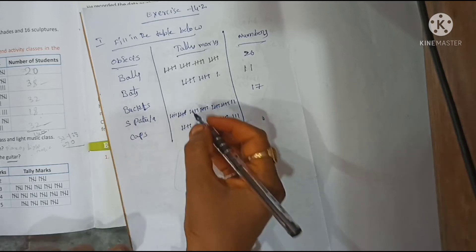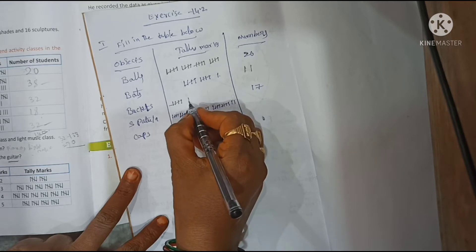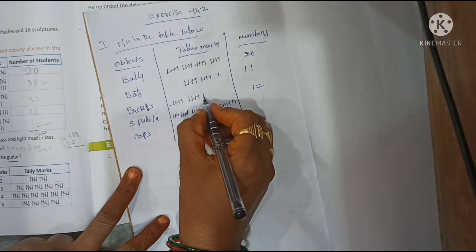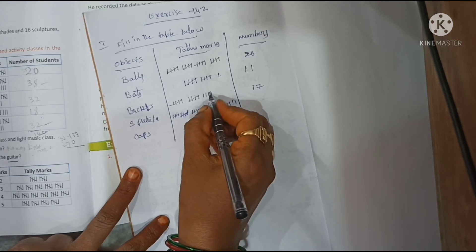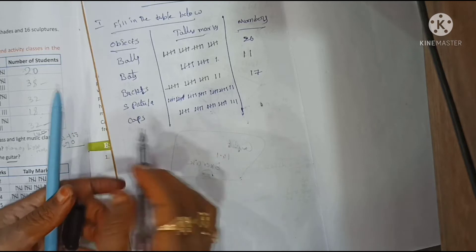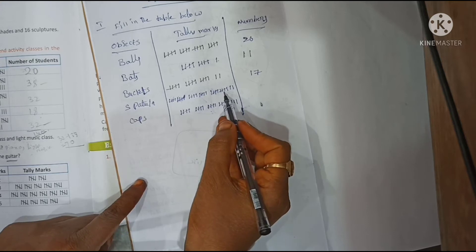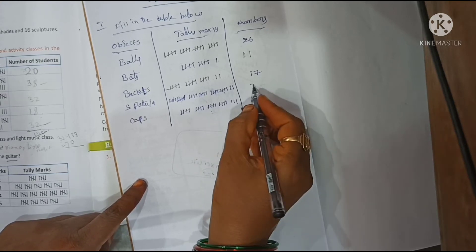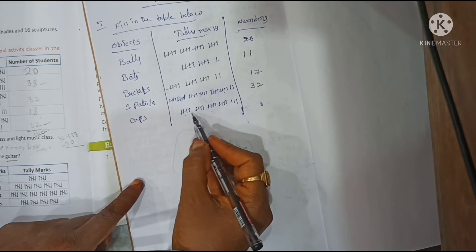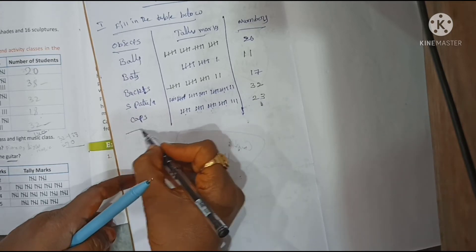How to write 70 in tally marks? We make groups of five: 5, 10, 15 — counting up. 5 plus 5 is 10, 15, 20, 25, 30 — then 31, 32. Answer is 32. For buckets: 5, 10, 15, 20 — answer is 23. The table is now complete.